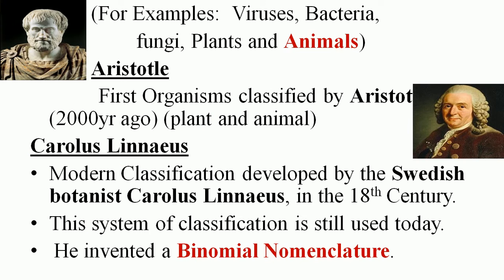Let us go through some historical background of taxonomy. In life, there are viruses, bacteria, fungi, plants, and animals. The first attempt to classify these big groups was made by Aristotle, about 2,000 years ago. He divided life into two parts: plants and animals. Afterwards, another man, Linnaeus — a modern botanist — in the 18th century used a simple classification system that is used until today. He also traced the binomial nomenclature.